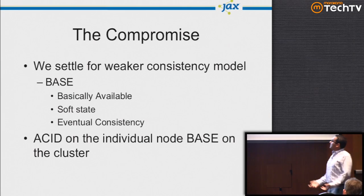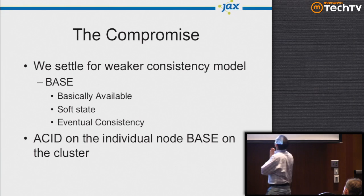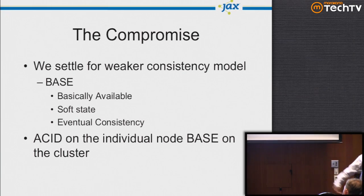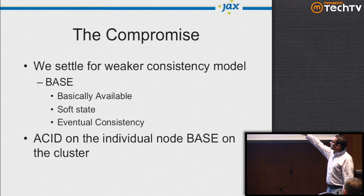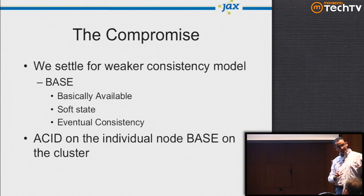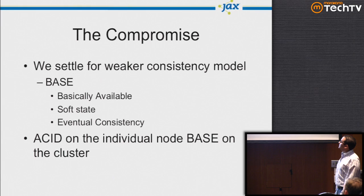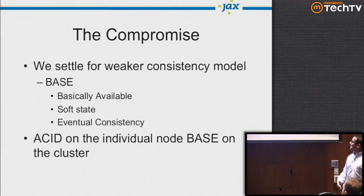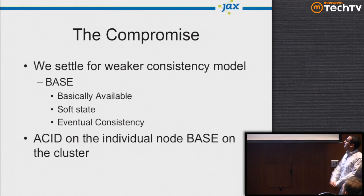The compromise is we settle for a weaker consistency model, which we call BASE — as opposed to ACID. BASE stands for: Basically Available, Soft State — where some data is updated and some is still stale — and Eventual Consistency, where all that soft state will eventually be translated to the most current value. So we're talking ACID on the individual node but BASE on the cluster.